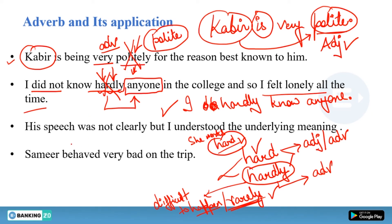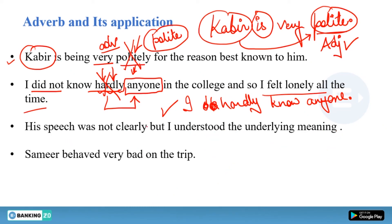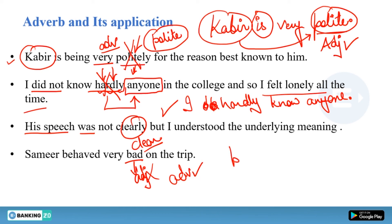Third sentence: His speech was not clearly but I understood the underlying meaning. Here, 'clearly' is an adverb, but 'is' is a linking verb requiring a subject complement, so we need an adjective. The correct word is 'clear' not 'clearly.' Fourth sentence: Sameer behaved very bad on the trip. 'Bad' is an adjective, but here we need an adverb to modify the verb 'behaved.' So it should be 'badly.' Sameer behaved very badly — very qualifies badly, and badly is the adverb.